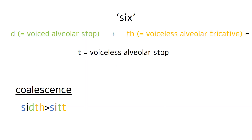T has three important features: it's voiceless, alveolar, and a stop. Voiceless means we don't vibrate our vocal cords while pronouncing it. Alveolar means we pronounce it by touching our alveolar ridge behind our front teeth with the tip of our tongue. Stop means that the stream of air is completely blocked when we pronounce it. It got its voicelessness from the TH, its stopness from the D, and its alveolarness from both. Coalescence is one of the things that can happen when a language can't handle two consecutive sounds for various reasons.